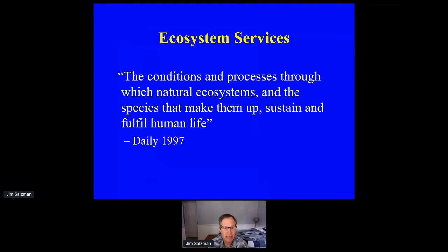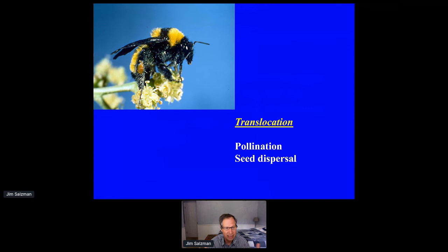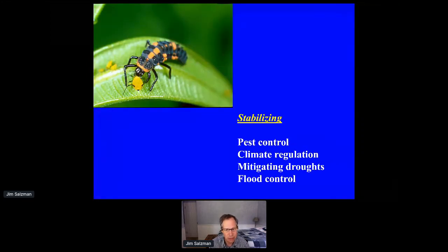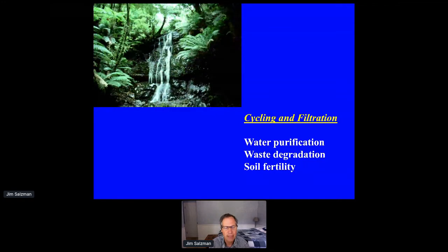Gretchen Daily's definition calls ecosystem services the conditions and processes which natural ecosystems sustain and fulfill human life. There are several useful categories. One is translocation services — moving things from one place to another, incredibly important for agriculture and plants. The second is stabilization services: pest control, where the vast majority is through natural predation, not pesticides; climate regulation; carbon sequestration; water metering; filtering through soil; mitigating droughts; and flood control. The final category is cycling and filtration: water purification, breaking down waste, and renewing soil fertility.